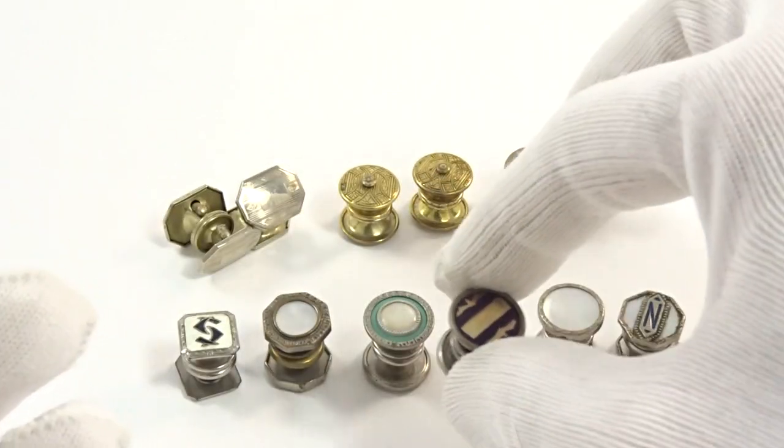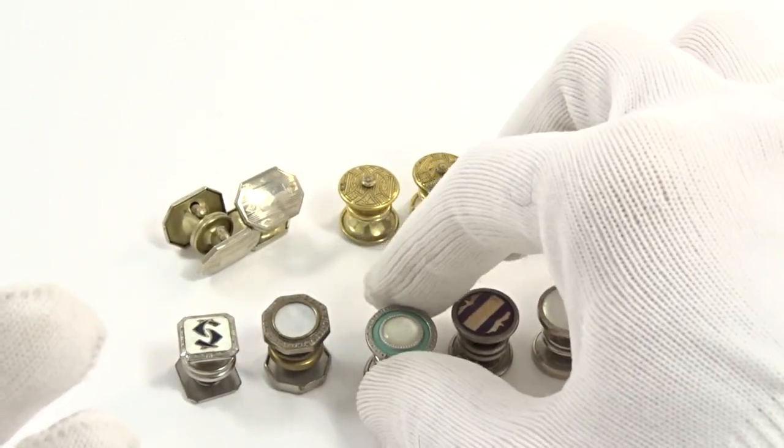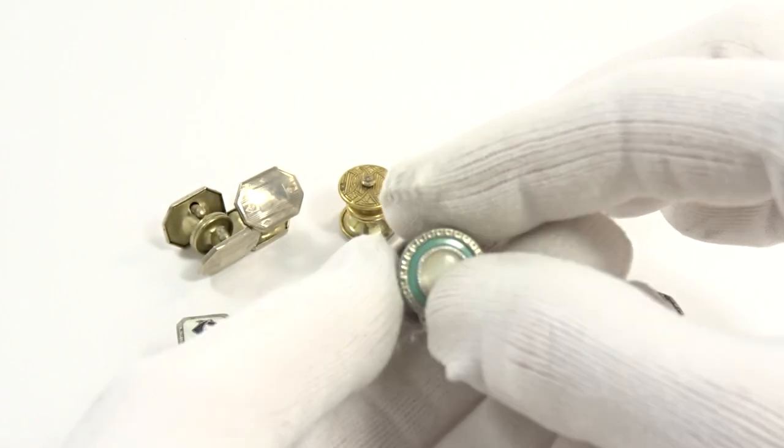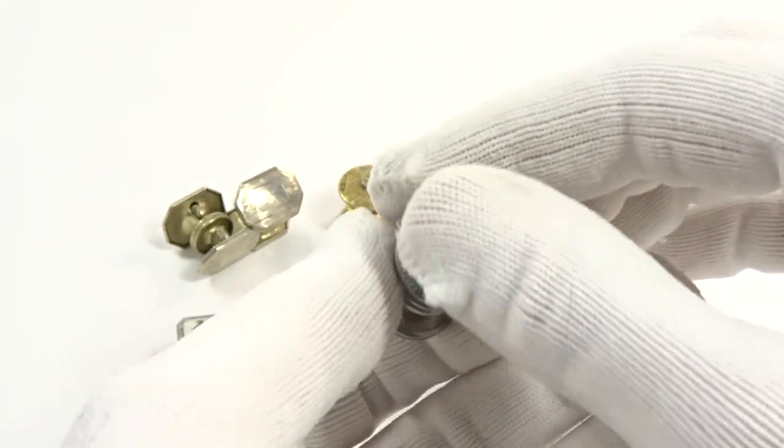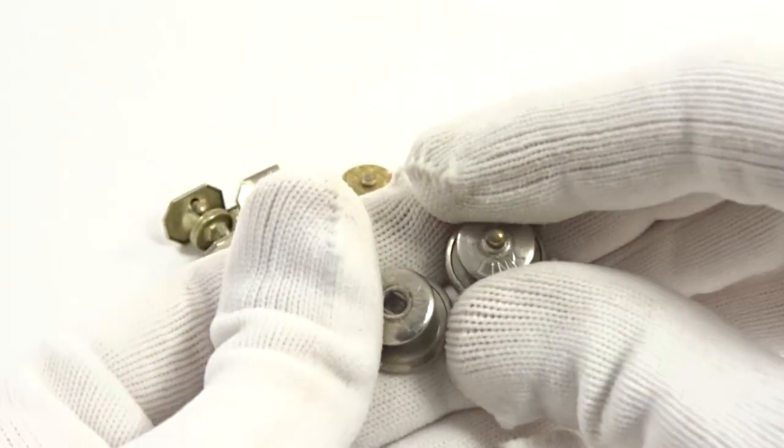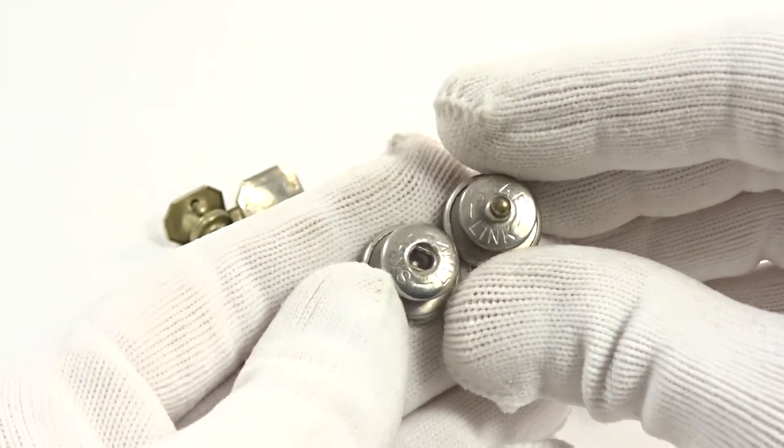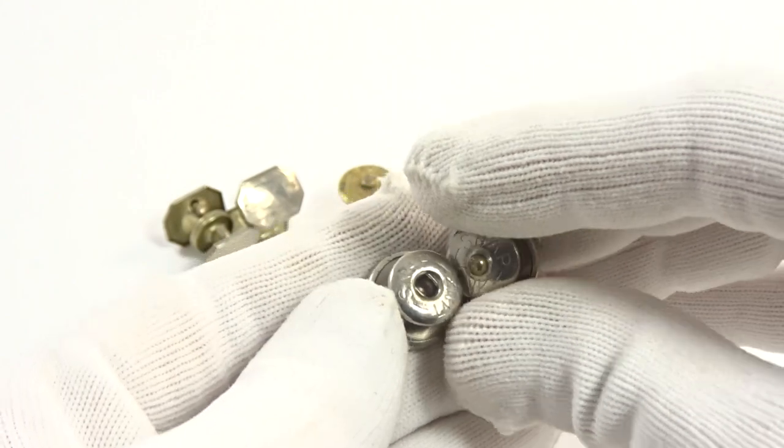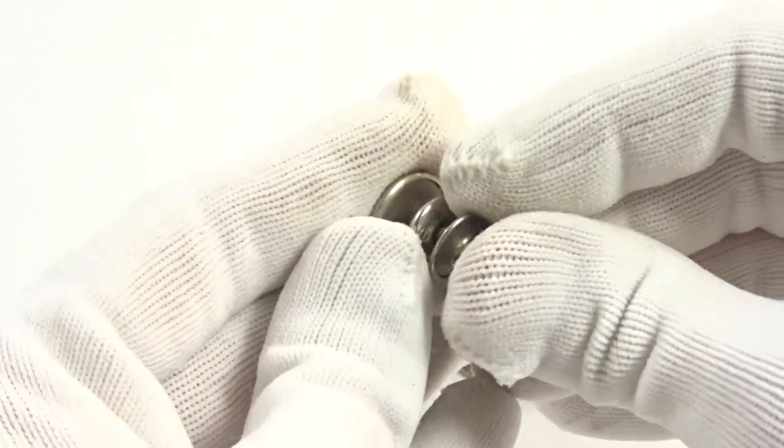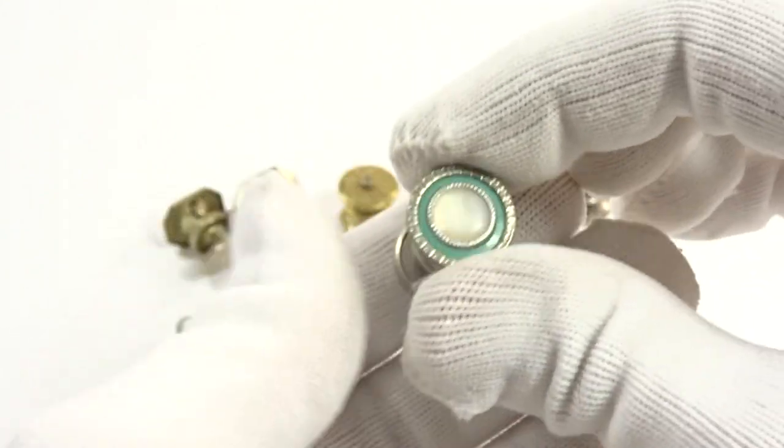This is another one you'll see a lot of—the mother of pearl in celluloid, typical art deco design. This one is signed 'snap link.' You'll find that a lot. I believe it might have come from a wholesale catalog where it says snap link, but a lot of different designs.